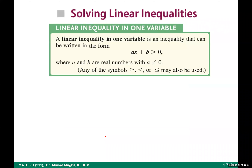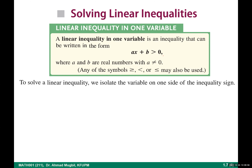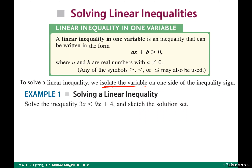Now let's start solving linear inequalities. A linear inequality in one variable has the shape ax plus b with one of the inequality symbols, where a is not zero. To solve it, you isolate the variable: add negative b to both sides, then divide by a. Let's see this example: add negative 9x to both sides.